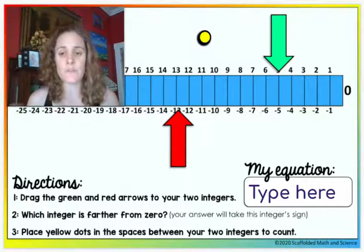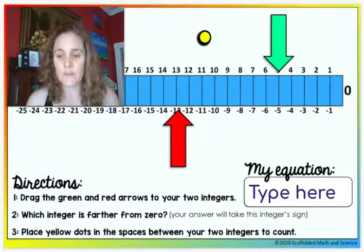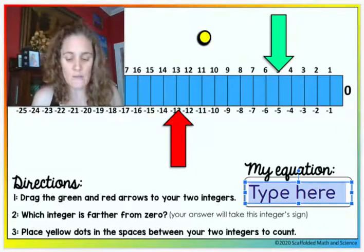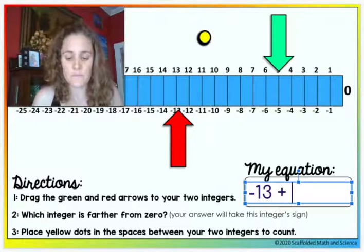Really it works on absolute value, so I can show you how that works. So here, let's say I type the equation, say I wanted to do negative 13 plus 8.